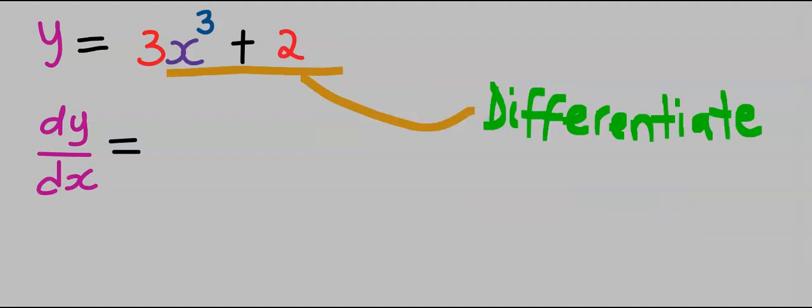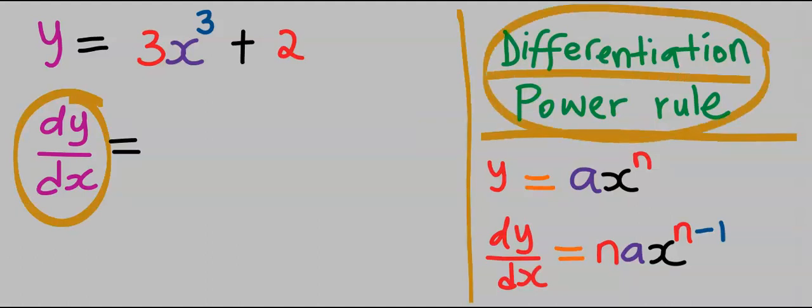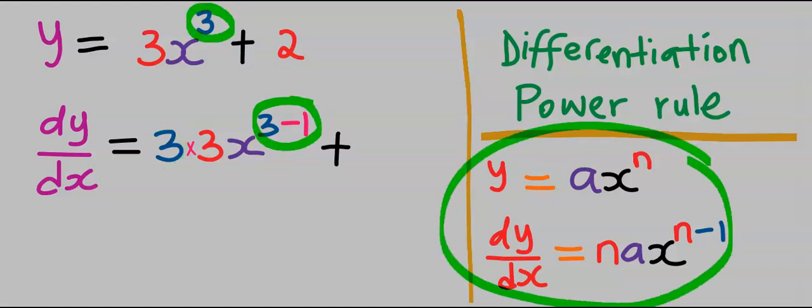To find dy dx, we are going to apply differentiation power rule. Next, we are going to differentiate 3x to the power of 3. These 3 at the power will come down and this same 3 will minus 1 according to the power rule of differentiation.